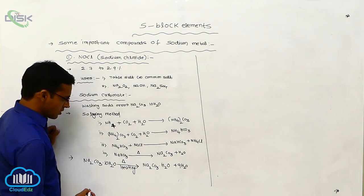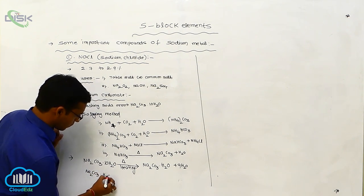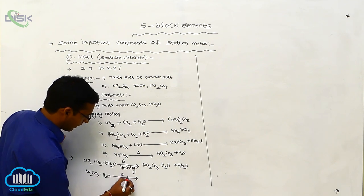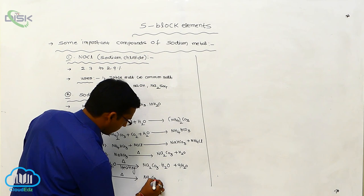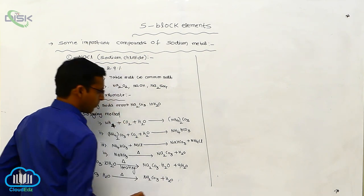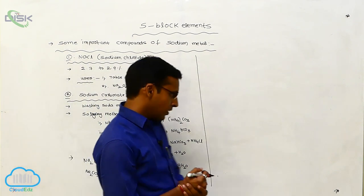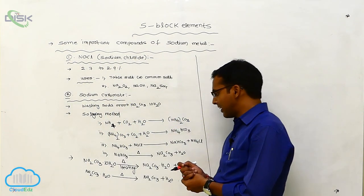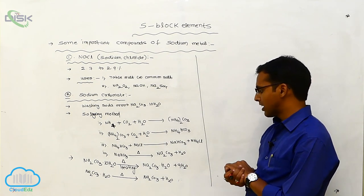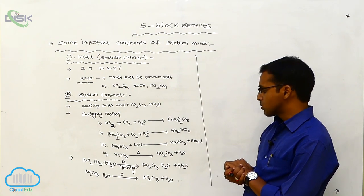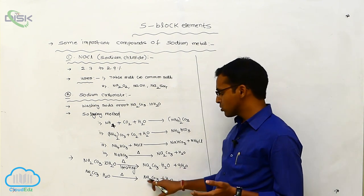Na₂CO₃·10H₂O on heating produces Na₂CO₃·H₂O with complete removal of water molecules. The sodium carbonate decahydrate substance undergoes heating; by loss of one mole of water it forms sodium carbonate monohydrate. On further heating, it gives anhydrous sodium carbonate Na₂CO₃.